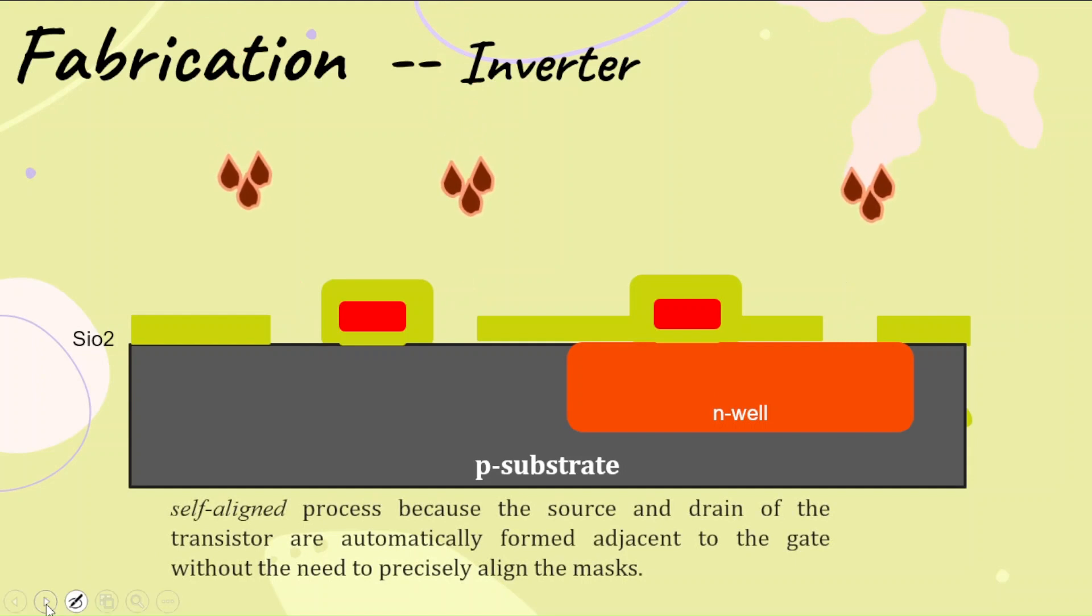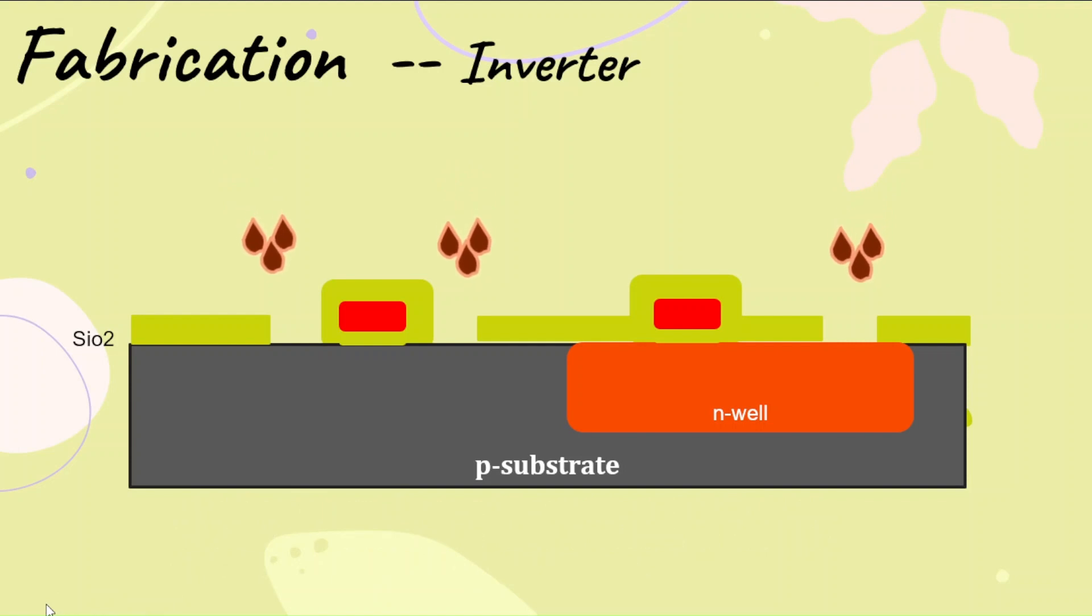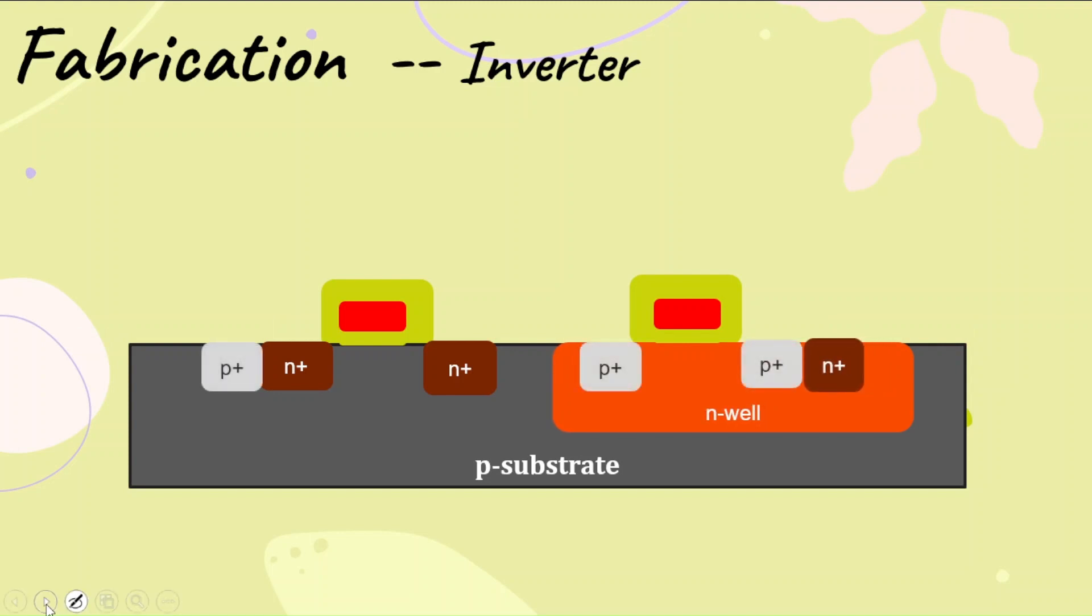In the same area, you can see that self-aligned source and drain formation takes place. This impurity is again added into the layer, and n-plus layers are formed. In the next step, they remove the silicon dioxide and place a new set of silicon dioxide so that p-plus layers are formed.